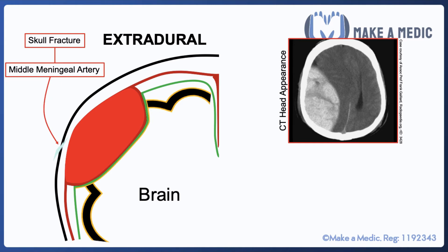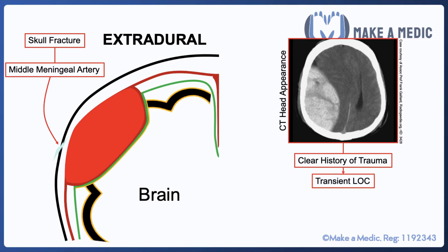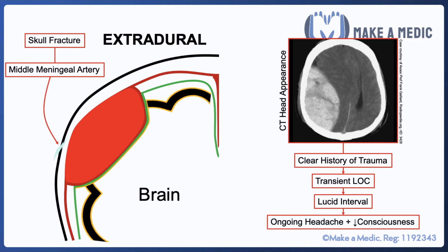The classical history for someone with an extradural hemorrhage would be a clear history of some sort of head trauma, which begins with a short episode of loss of consciousness. Then they'll recover and have a lucid interval, before which they develop an ongoing headache and consciousness reduces again.